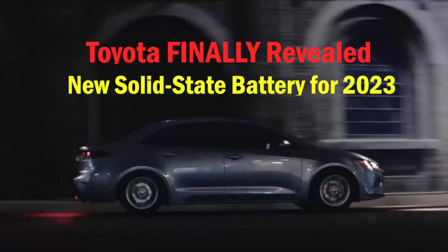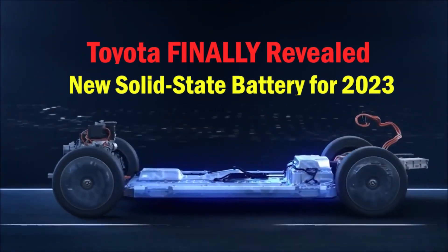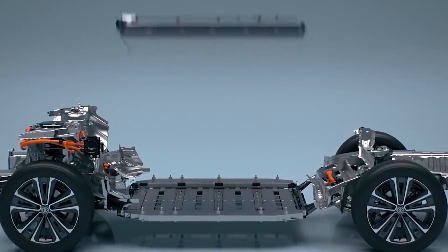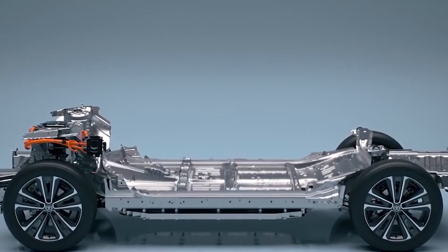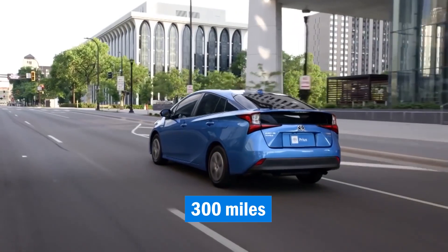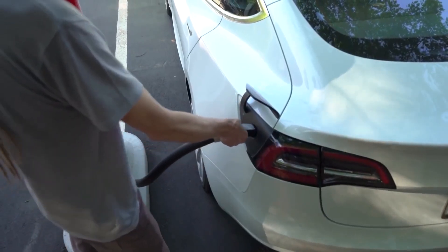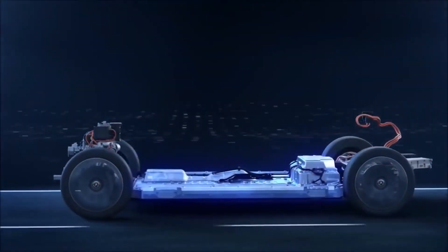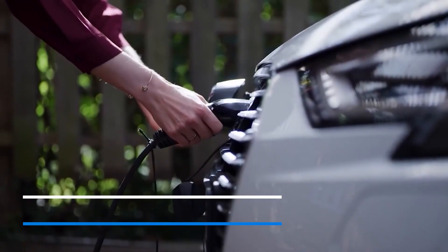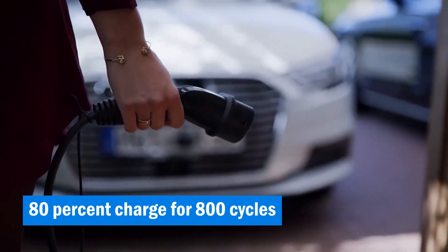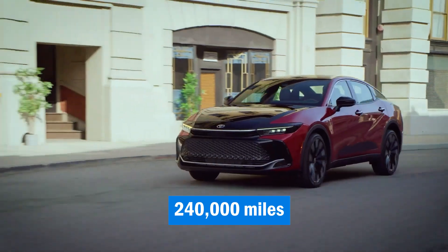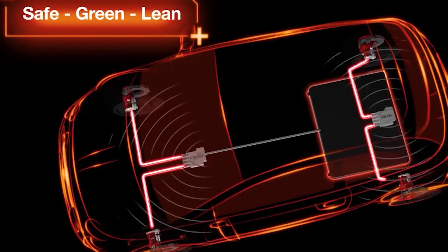Toyota finally revealed new solid-state battery for 2023. Consider a battery for an electric vehicle that has a range of more than 300 miles, charges in about 10 minutes, doesn't need a large heating or cooling system, can hold an 80% charge for 800 cycles or roughly 240,000 miles, and isn't prone to spontaneous combustion.